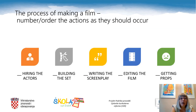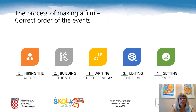The fifth part of the mind map was the process of making a film. There are five actions enlisted here: hiring the actors, building the set, writing the screenplay, editing the film and getting props. Please, in your notebooks, number or order the actions as they should occur. The correct order of the events is: first, writing the screenplay; second, building the set; third, editing the film; fourth, getting props; and fifth, hiring the actors.